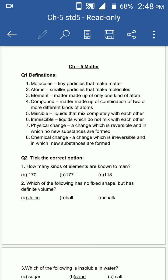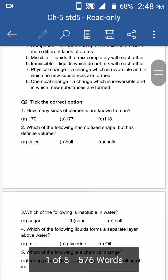Second: which of the following has no fixed shape but has definite volume? Kaun sa aisa element jiska fixed shape nahi hota hai lekin volume definite hota hai? The answer is juice. Box, ball ka definite fixed shape hota hai. Chalk ka bhi fixed shape hota hai. But juice ka no fixed shape, koi bhi fixed shape juice ka nahi hota hai.